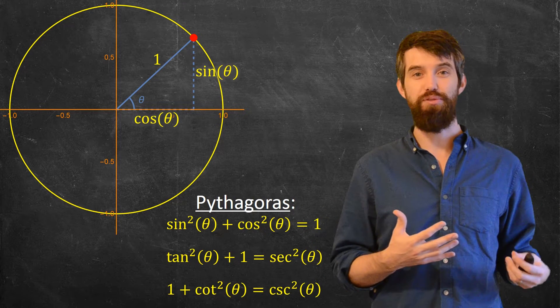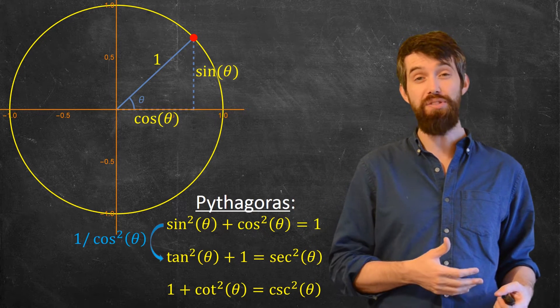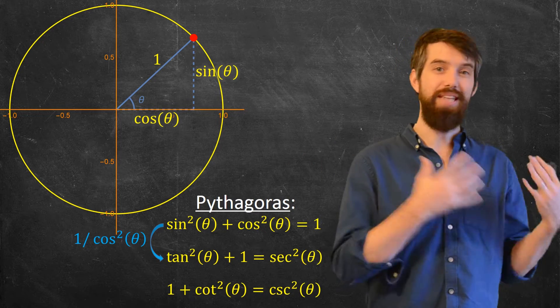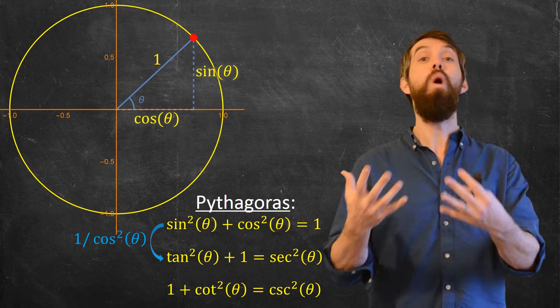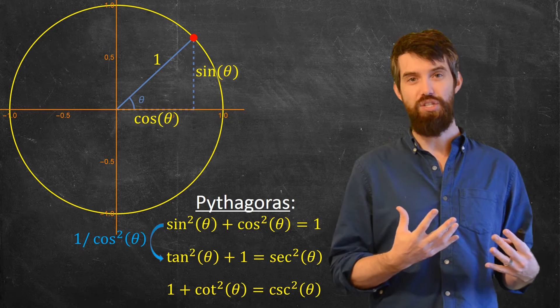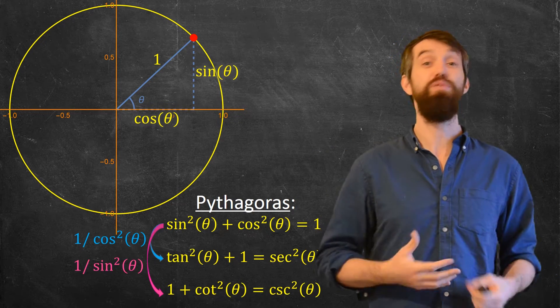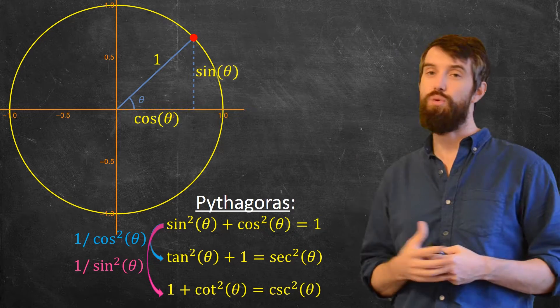The second one comes from dividing everything by cosine squared. Sine squared over cos squared is tan squared, cos squared over cos squared is 1, and 1 divided by cos squared is secant squared. And likewise, the third comes from dividing everything by sine squared.